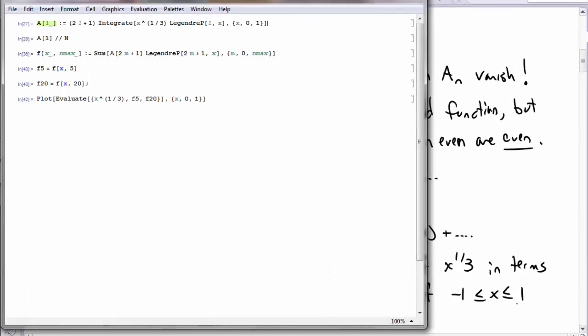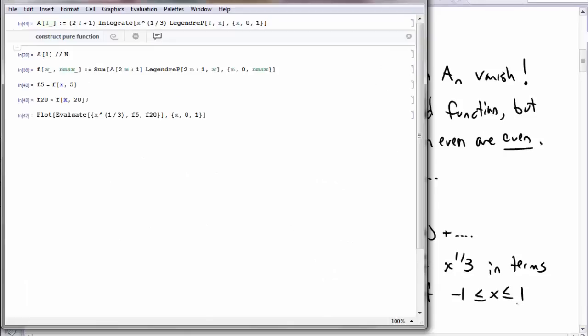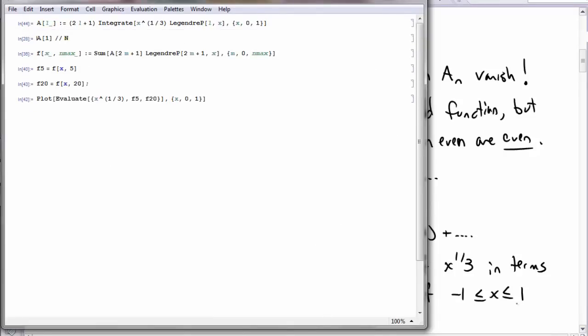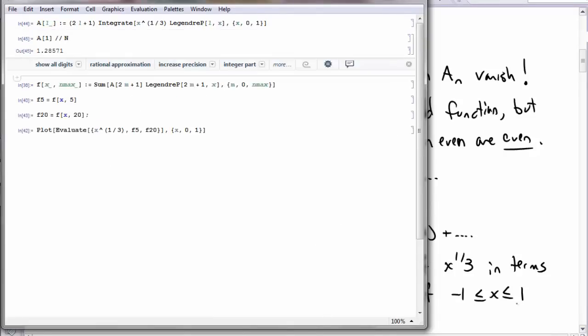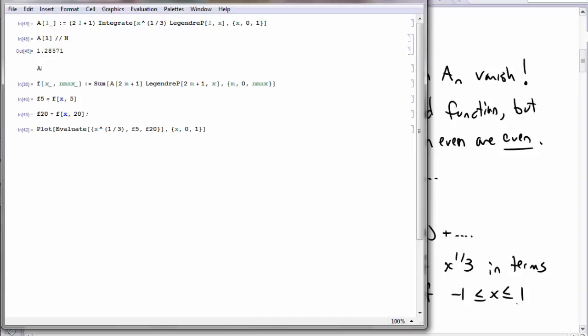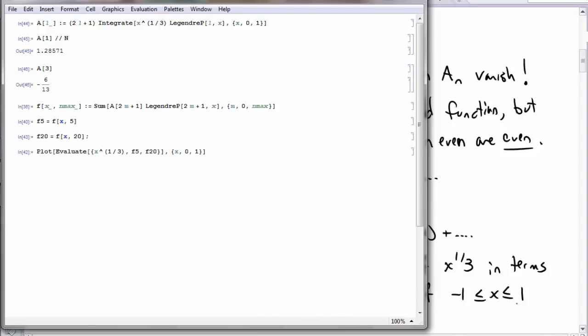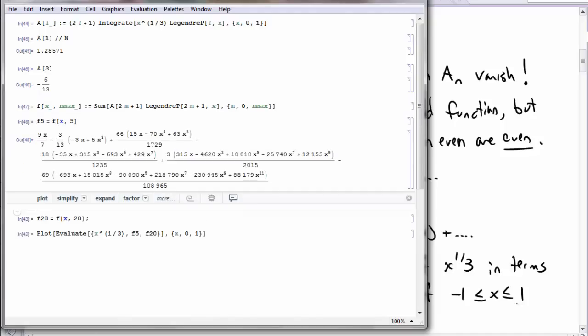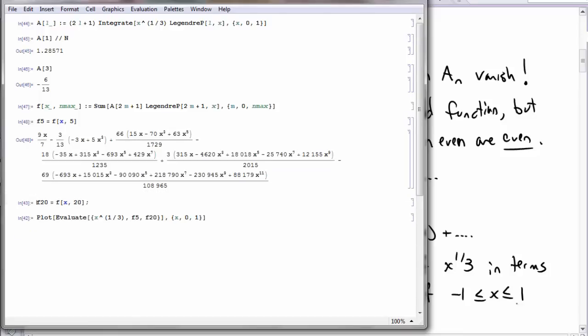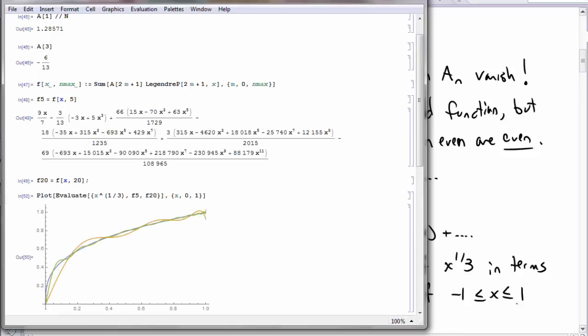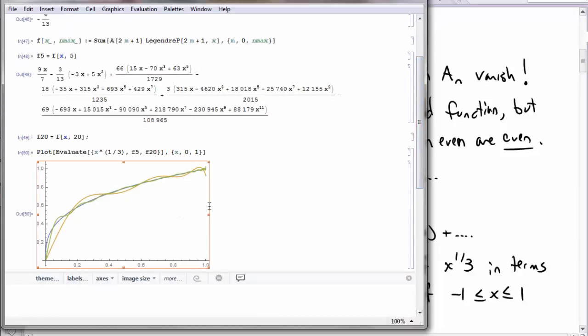So let's see how this works in Mathematica. So we define some function which calculates the coefficients. And indeed the first coefficient is about 1.3. The third coefficient is like negative 6 over 13. We write our function as the expansion of the coefficients times the Legendre polynomials. If we go out to 5 Legendre polynomials, you get something that looks like this. You can also go out to 20 Legendre polynomials. And then if you plot that, this is what you get.